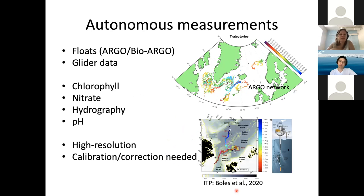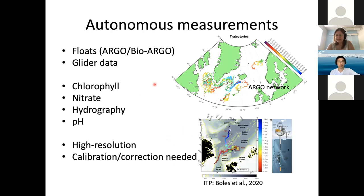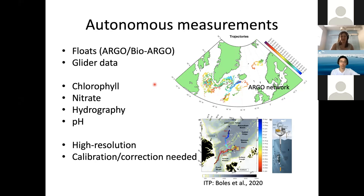These are examples of autonomous measurements. The most common is BioArgo, which is being deployed quite extensively. Additionally, an ice-tethered profiler was deployed in the Arctic for over a year, with an instrument crawling on a wire to provide profiles of biogeochemical variables under sea ice. This is perhaps the best Lagrangian-type time series for variables under sea ice, since we barely have any observations there.